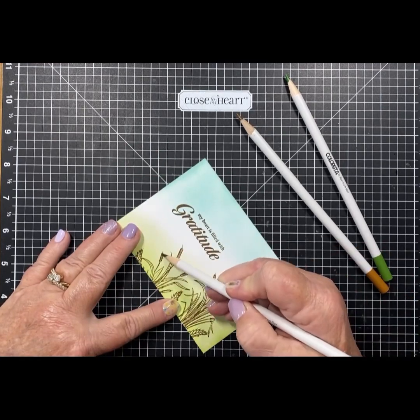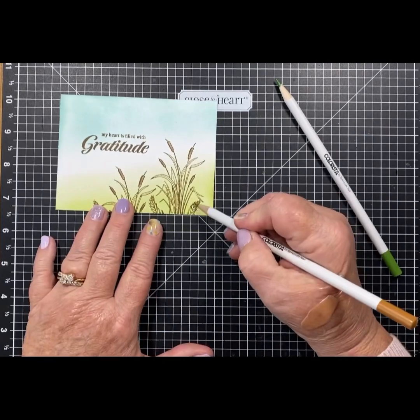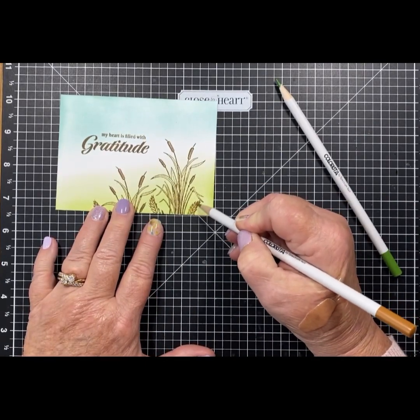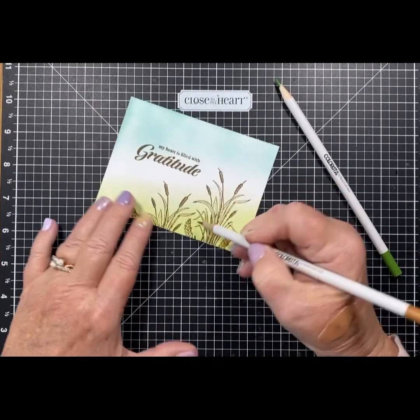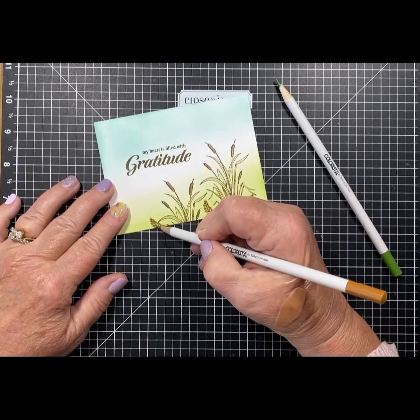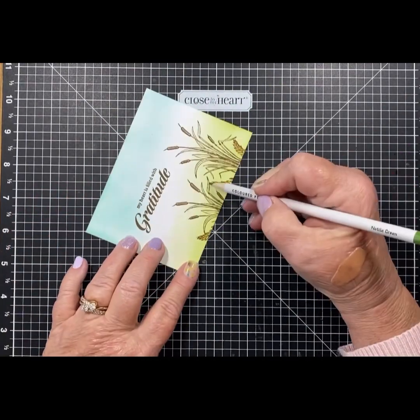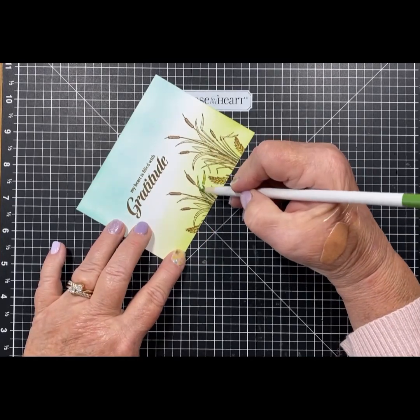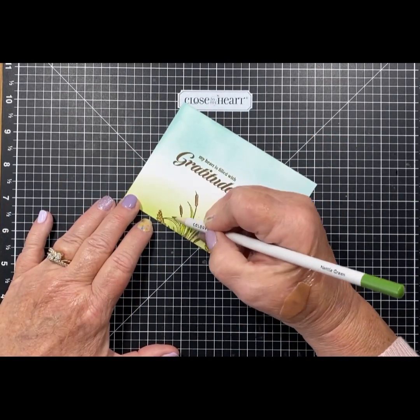Always hold your pencil at a little bit of a slant so that you can get a good color without being too hard or too sharp. I grabbed my oak tree pencil to do the wheat, and now it's the nettle green for the leaves.